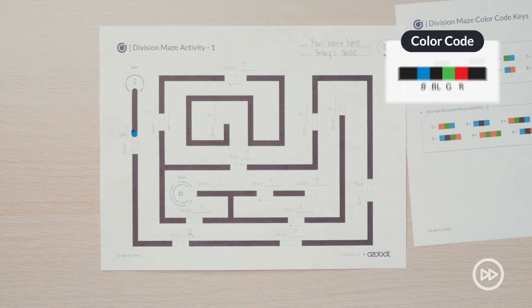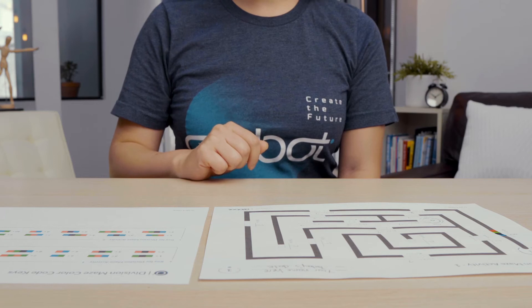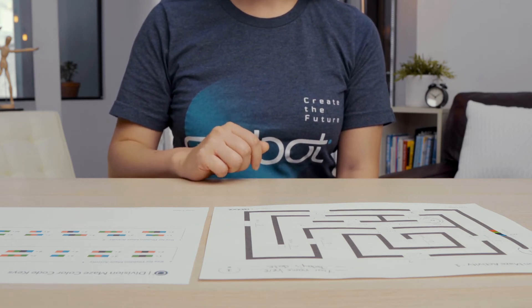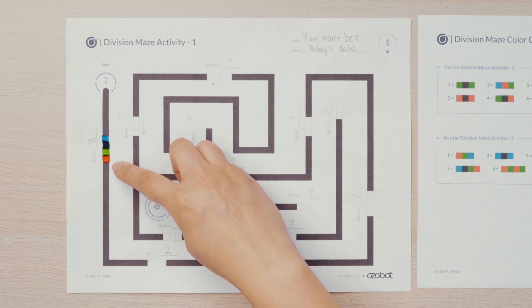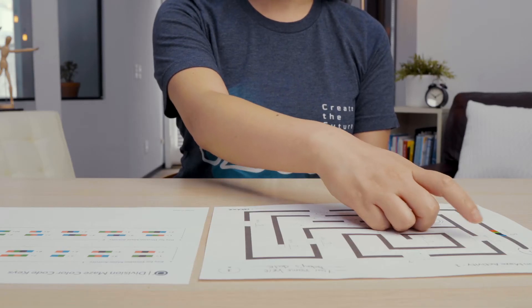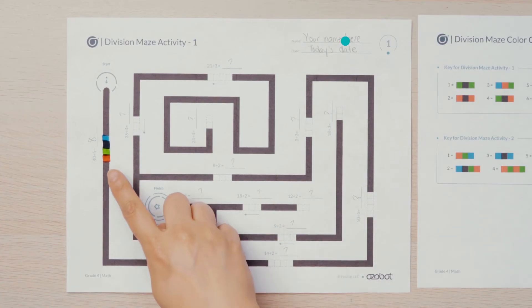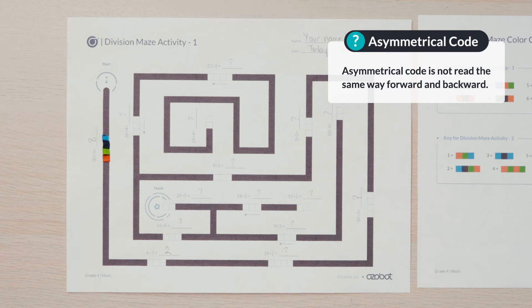The color code for 8 is blue, black, green, and red. Be sure that you are filling in the code in the direction your bot will travel, so the top box will be blue. The next box will be black, and then green, and then red at the bottom. It's important that the Ozobot reads the color in that order. This is called an asymmetrical code because it is not read the same way forwards and backwards.